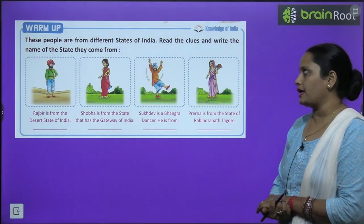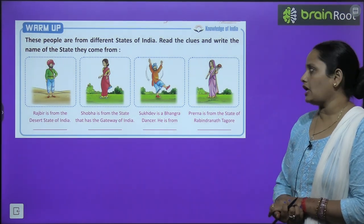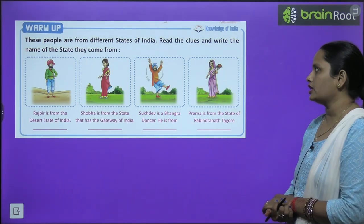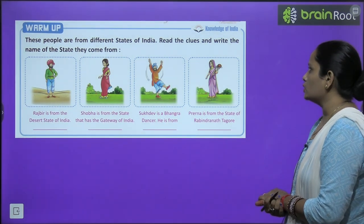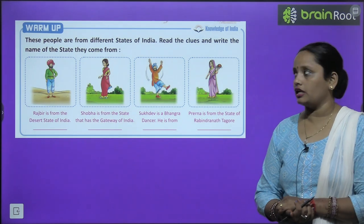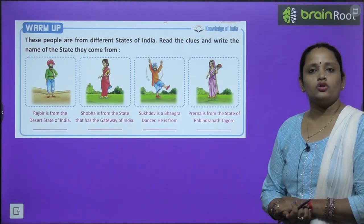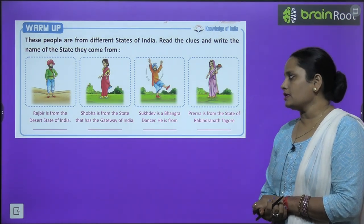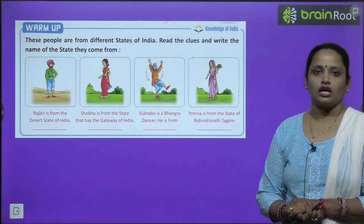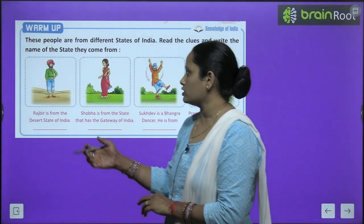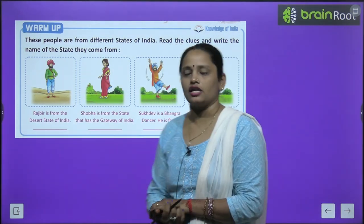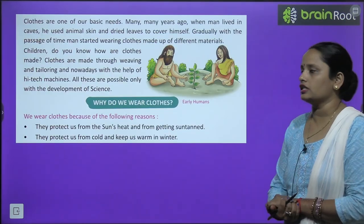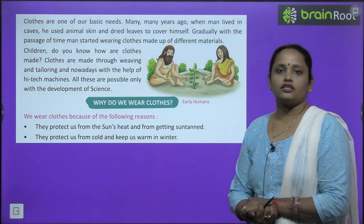Let's start with a warm-up exercise. These people are from different states of India — yeh alag-alag states of India ke vahaan se belong karte hai. You have to read the clues and write the name of the state they come from. For example, Rajbeeri is from the desert state of India, which means Rajasthan. Similarly, read the clues and fill in the name of the state. Now let's start the chapter.